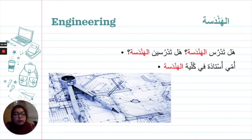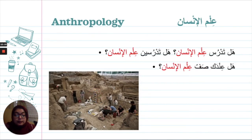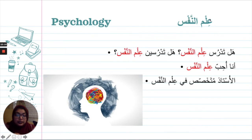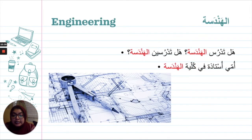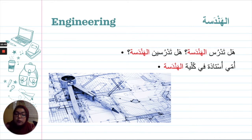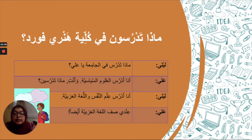One thing to notice: in علم الإنسان and علم النفس, the word علم doesn't have الـ (alif lam), but the second word does. We'll come back to this in a grammar lesson later in the chapter. الهندسة — engineering. هل تدرس الهندسة? أنا لا أدرس الهندسة. أمي أستاذة في كُلِّيَّة الهندسة — my mom is a professor in the college of engineering.